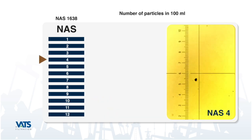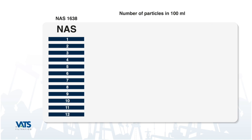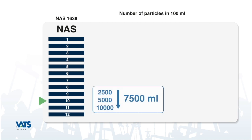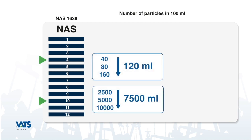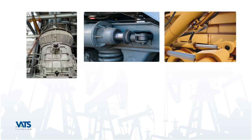On the other hand, if we clean the initial fill and begin with NAS 4 instead of NAS 10, we are starting with a very low number of particles. This number will also double every abrasion cycle, but will only go up by 120 during the same time as the NAS increases from 4 to 6. Changing the initial condition from NAS 10 to NAS 4 brings down the contamination buildup by a huge factor of 60.